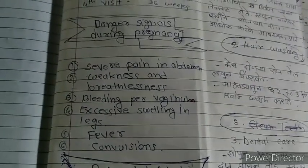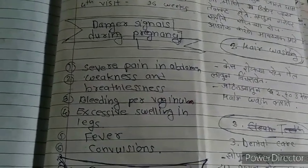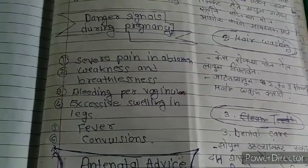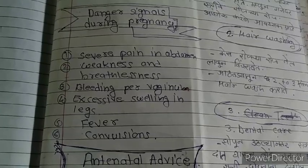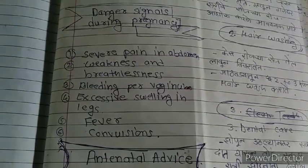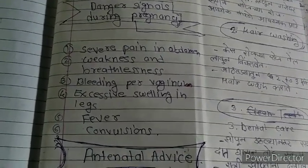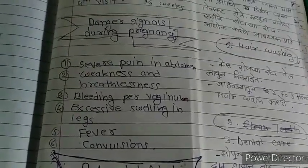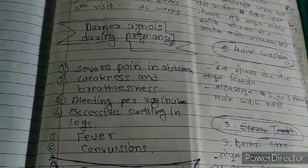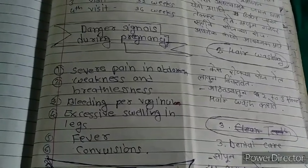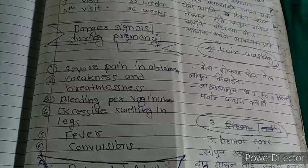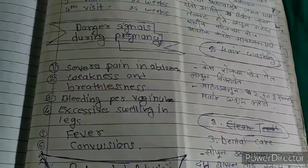Danger signs during the antenatal period: first, severe abdominal pain; weakness and breathlessness; bleeding per vaginal; excess swelling in legs; and fever and convulsions.